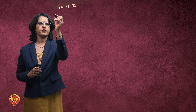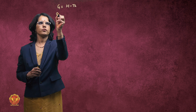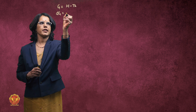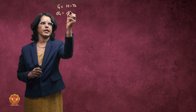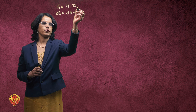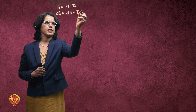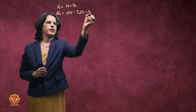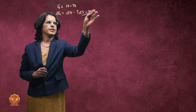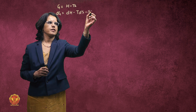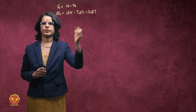G is equal to H minus TS. If we take the differential of this, then dG will be equal to dH minus two terms: TdS and SdT, i.e., dG = dH - TdS - SdT.